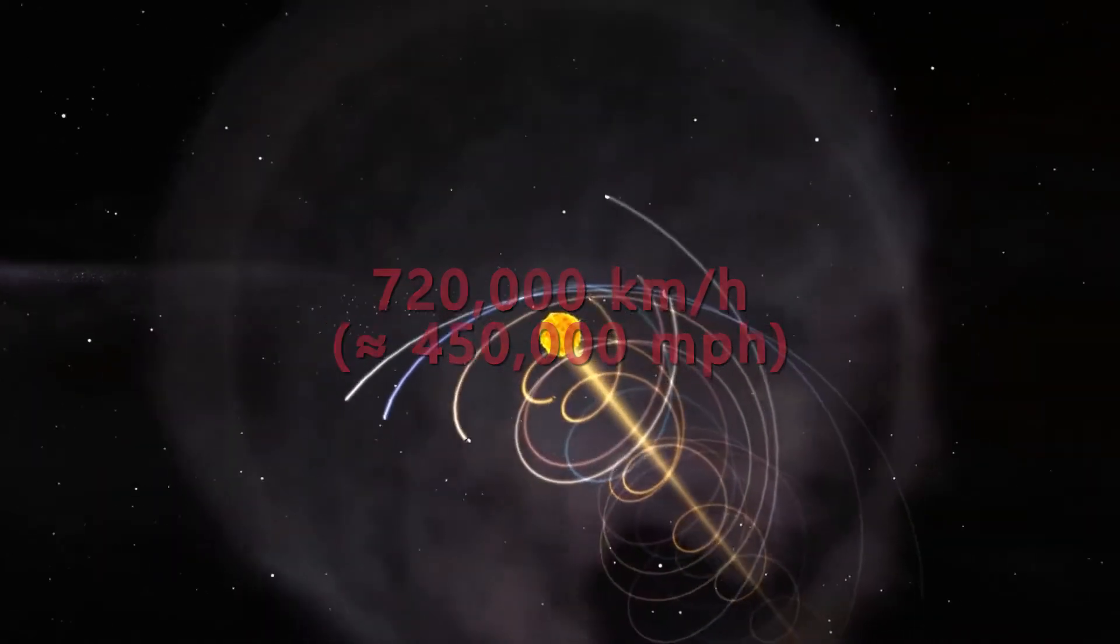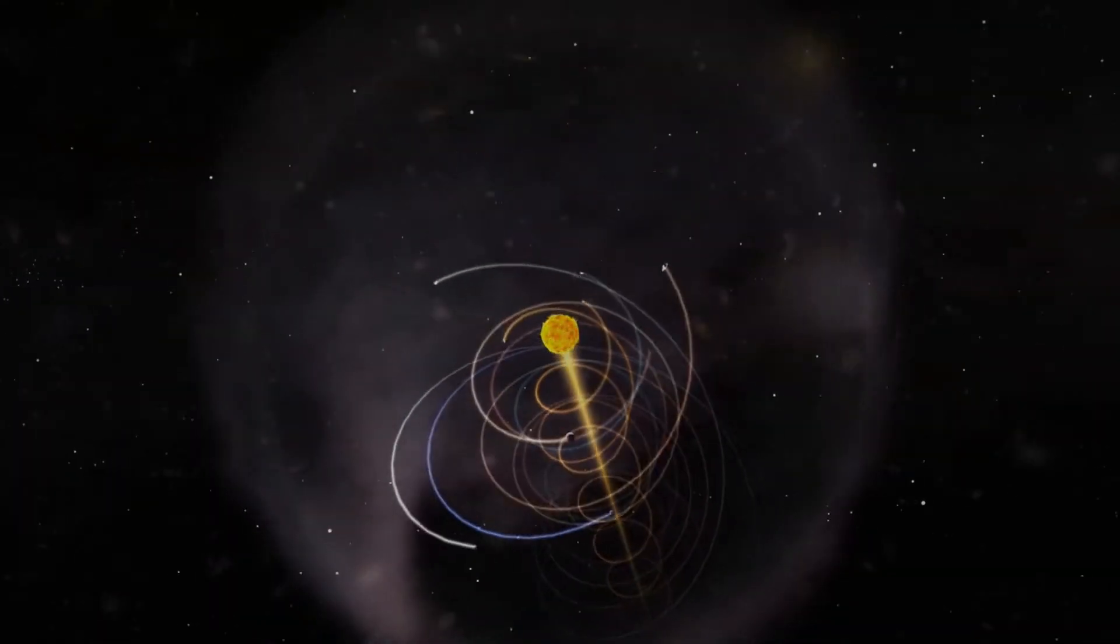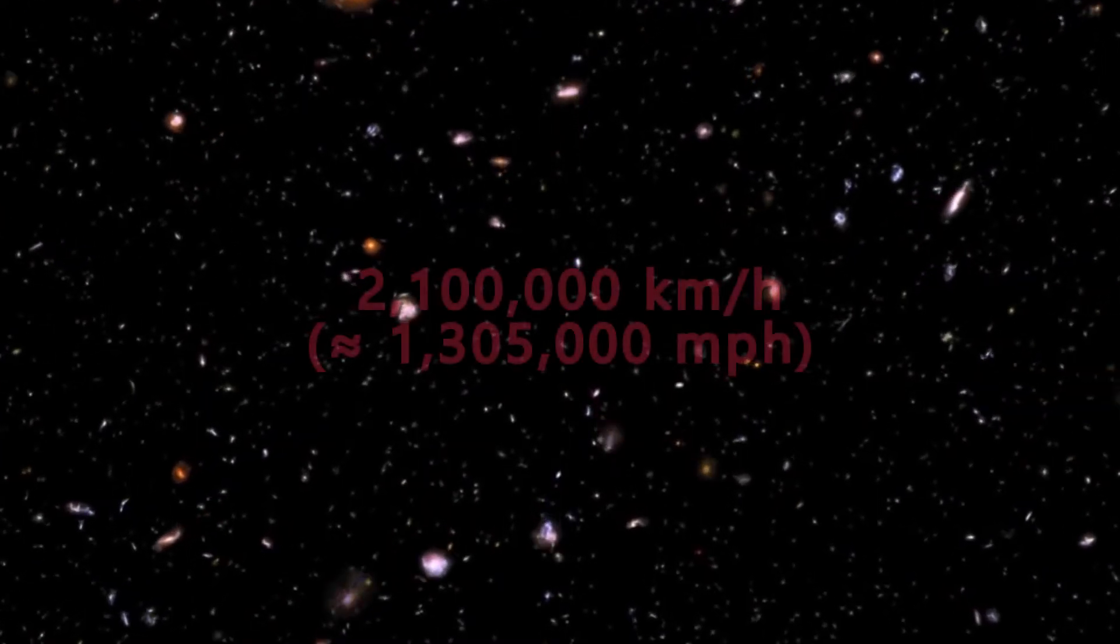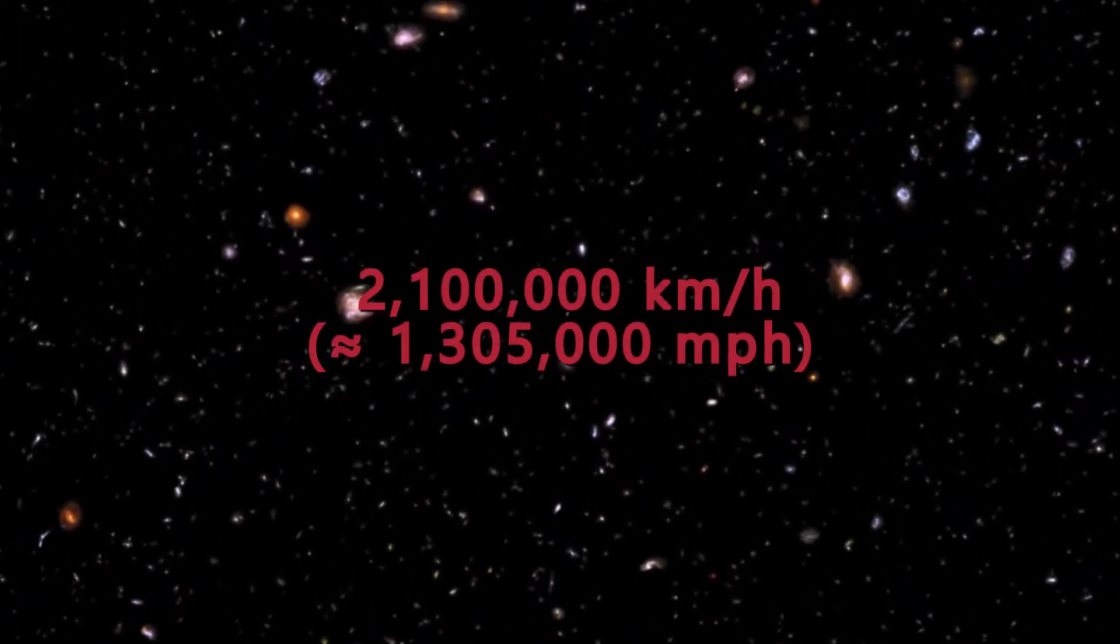While in its turn, the Milky Way is moving throughout the universe at a staggering speed of approximately 2.1 million kilometers per hour.